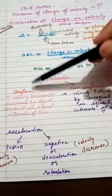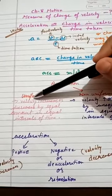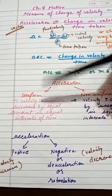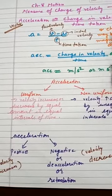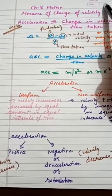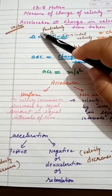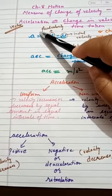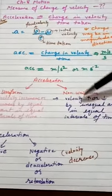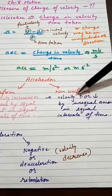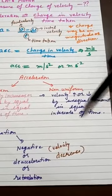Now, acceleration is of two types: uniform acceleration and non-uniform acceleration. Uniform acceleration is when velocity increases or decreases by equal amounts in equal intervals of time. For example, when a car is moving and increasing or decreasing its speed equally in equal intervals of time, that is known as uniform acceleration.